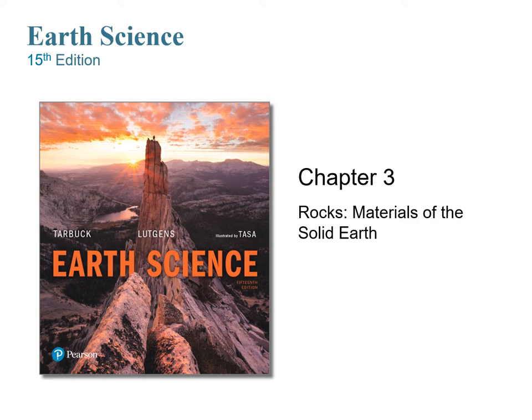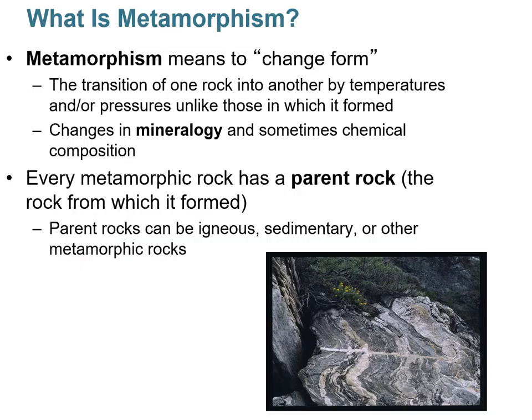Earth science class — let's finish up chapter 3, rocks: materials of the solid earth. This is the metamorphic rock section. Metamorphism means to change or to change form. Essentially, a metamorphic rock is a rock that has transitioned from either a sedimentary, an igneous, or another metamorphic rock by increases in temperature and pressure different from which it originally formed.